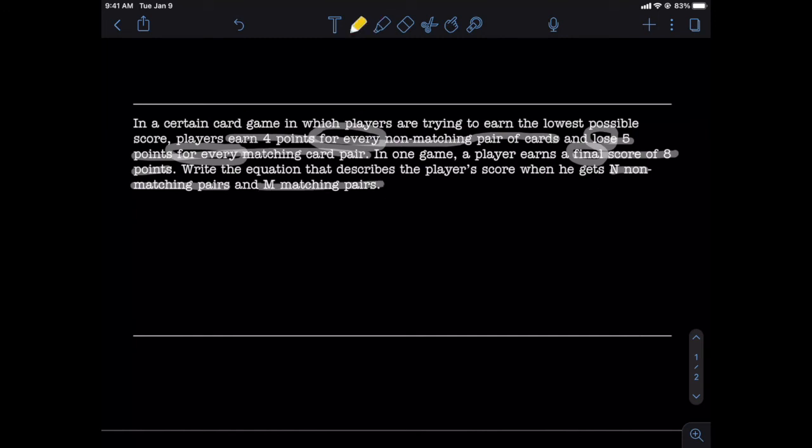Now to assign the numbers to each of the correct variables here, we have 4 going with non-matching pairs, so this means that 4N is in our equation. We have minus 5 points for every matching pair, so we have minus 5M, and altogether this was supposed to equal 8.